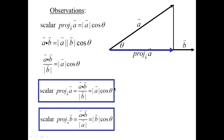The scalar projection of B onto A is different — it's still the dot product, but the magnitude of A is divided out. So it would be |B| times cos theta, or equivalently, dot them and divide out the magnitude of B.